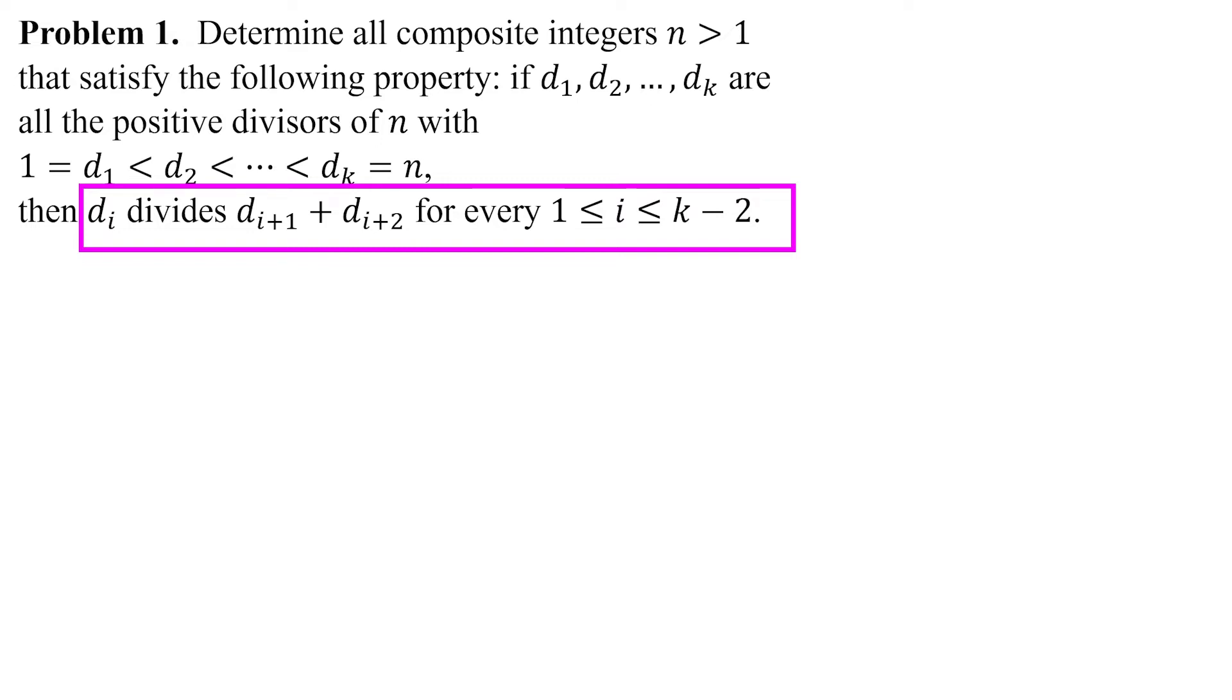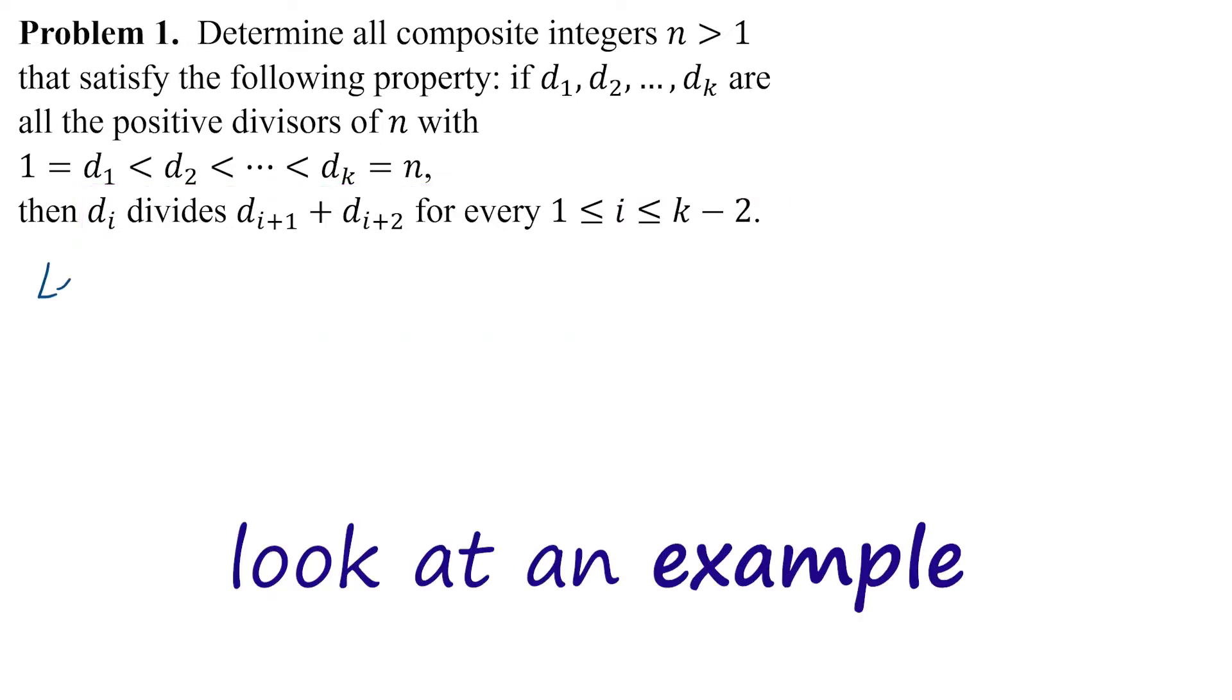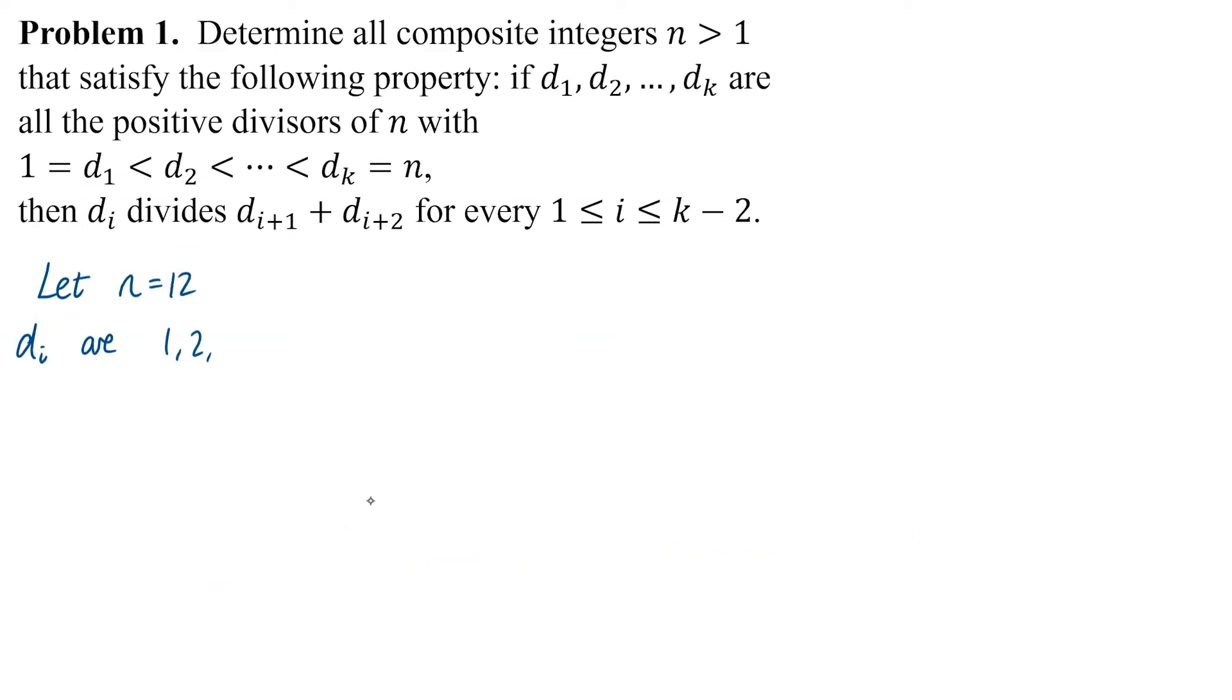It helps to look at an example. If we take a composite number like 12, the factors are 1, 2, 3, 4, 6 and 12 in ascending order. Now to check this property, we start from the smallest divisor and test if 1 divides the sum of 2 and 3. Of course that's true because 1 divides every integer.